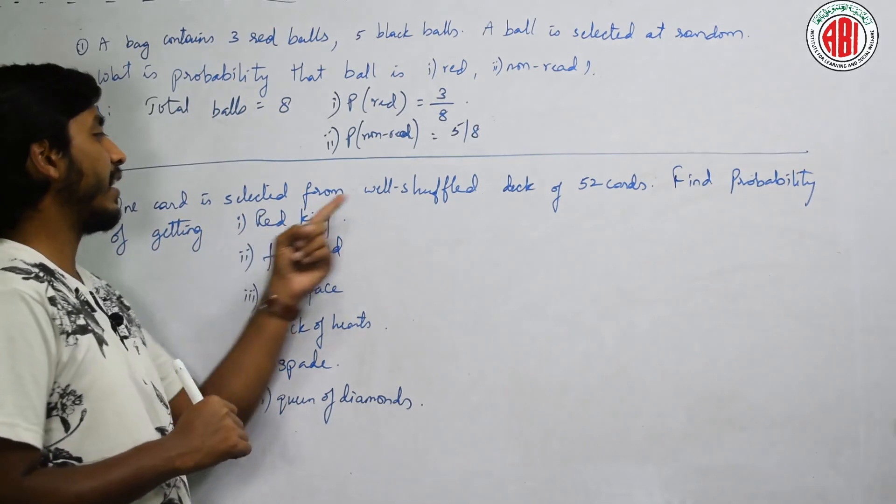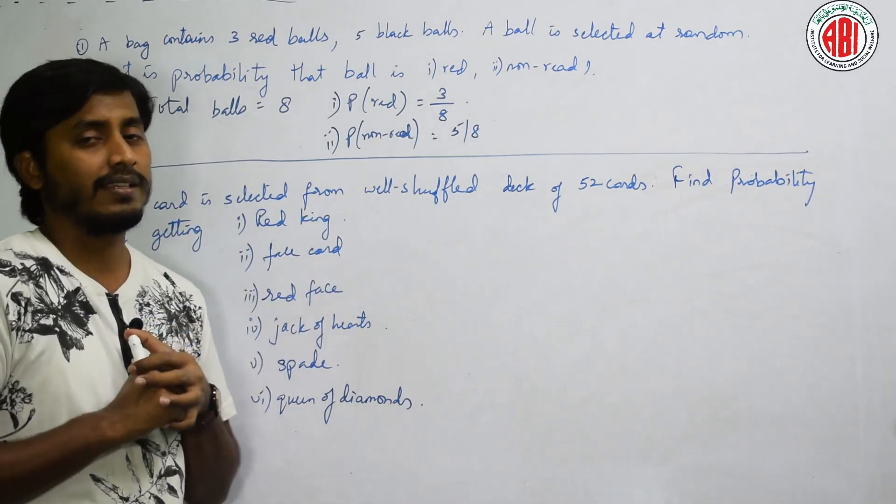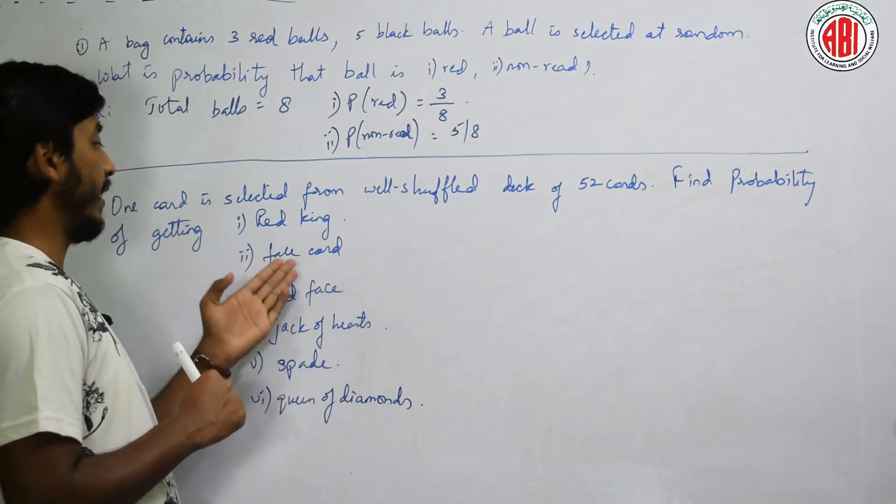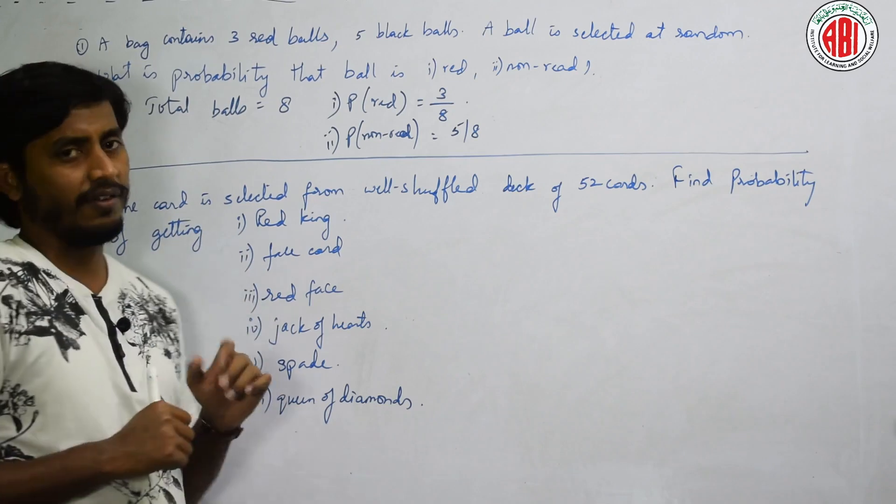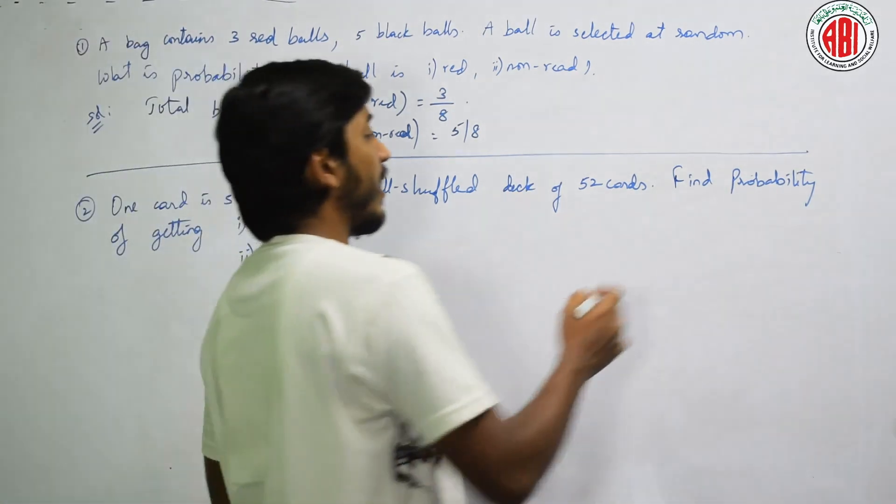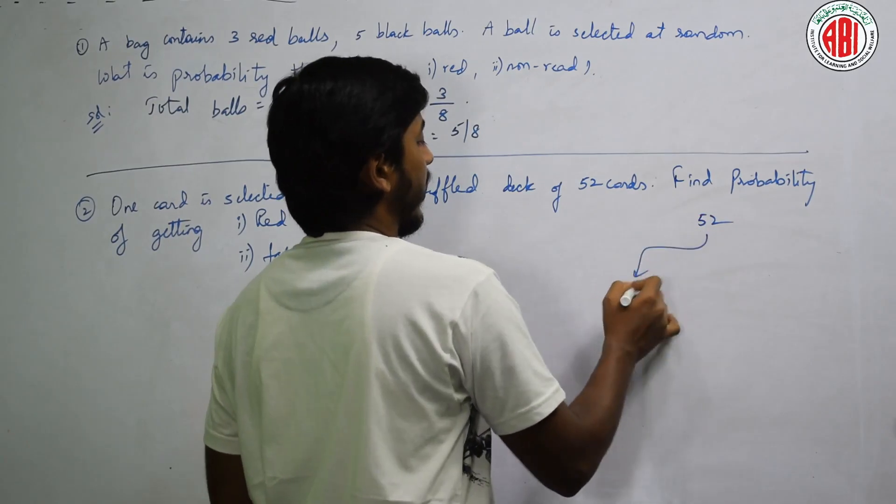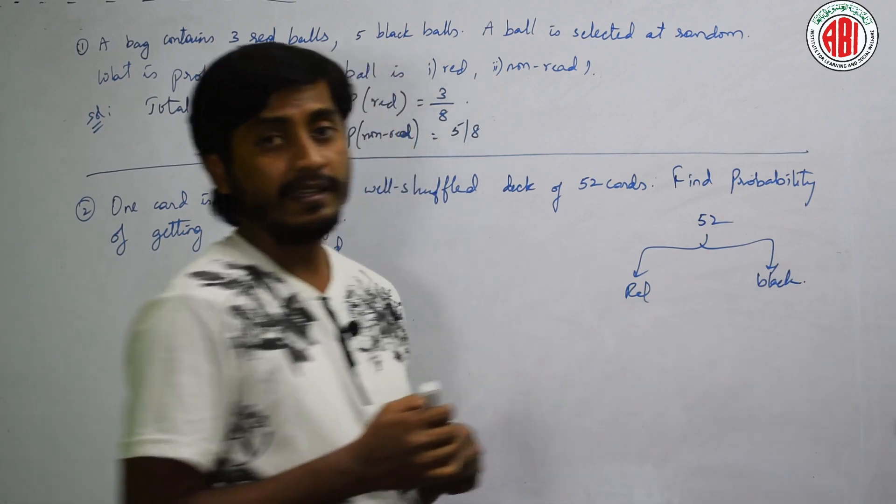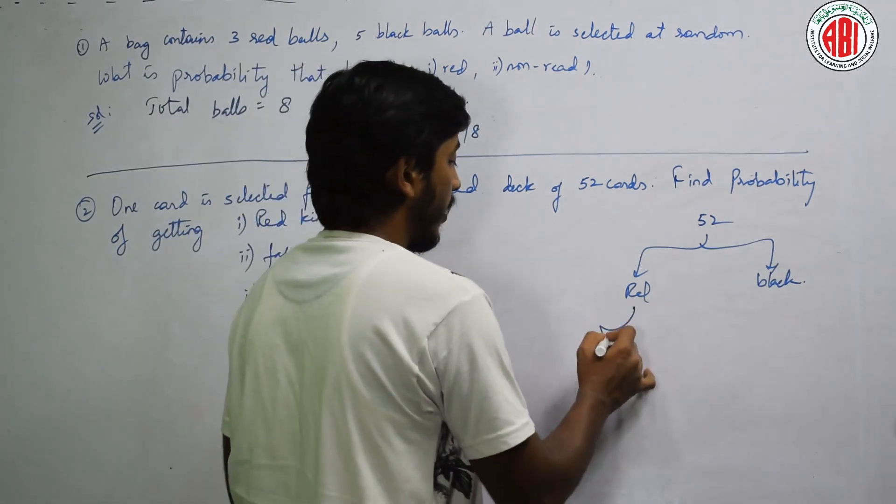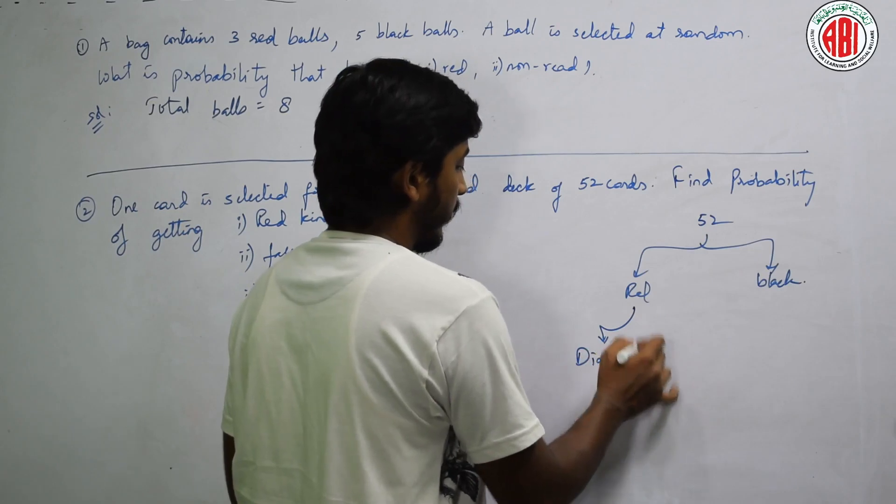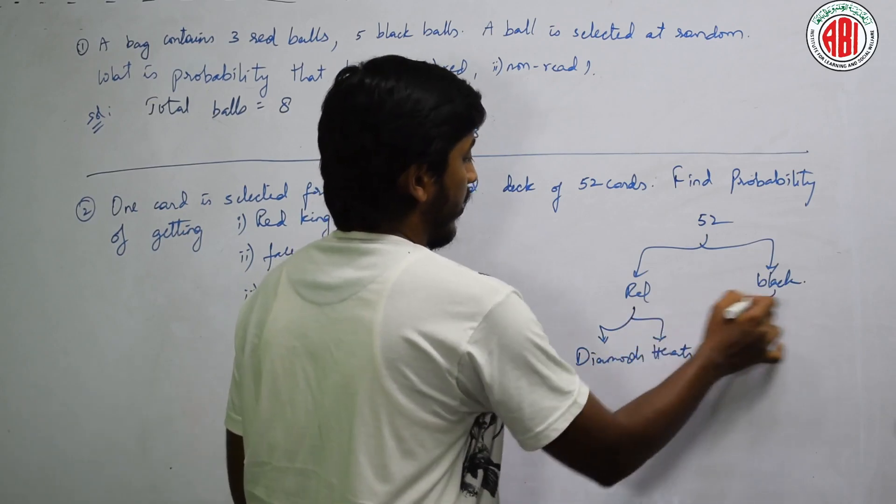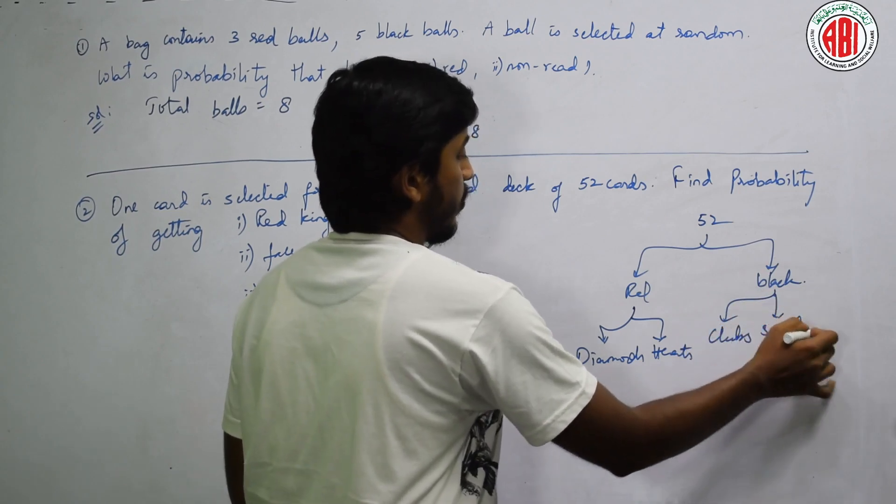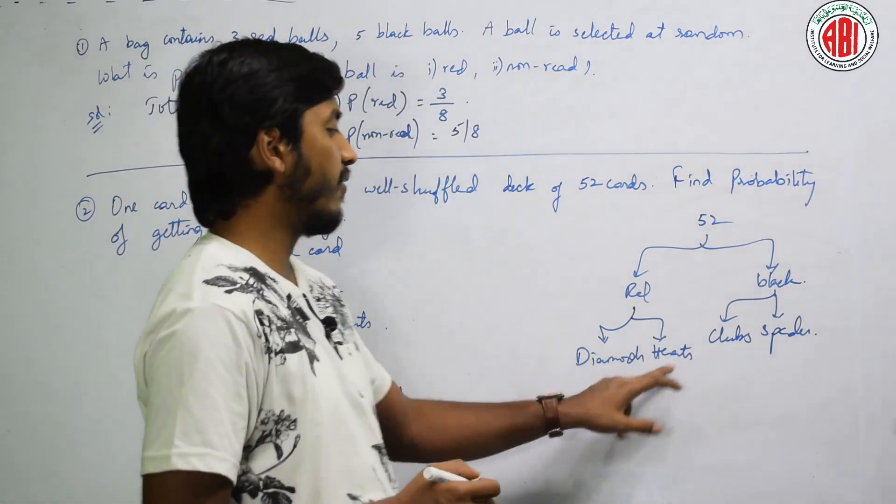Once again I am telling, the probability question will be very big but the answer will be always small. One card is selected from a well shuffled deck of 52 cards. Find the probability of getting red king, face card. Now just recollect how many cards are there? 52 out of which red and black. In red, how many? Diamonds, hearts, in black, clubs and spades.